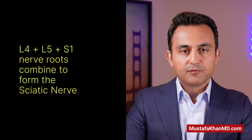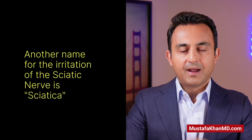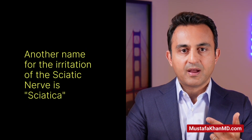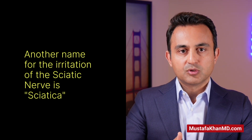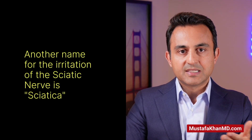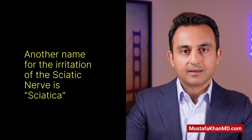Importantly, the L4, L5, and S1 nerve roots combine to form the sciatic nerve. So an irritation of either L4, L5, or S1 nerve root will produce sciatica, whereas irritation or compression of the L2 or L3 nerve will cause radiculopathy which, technically speaking, cannot be called sciatica. So that is the difference between radiculopathy and sciatica.